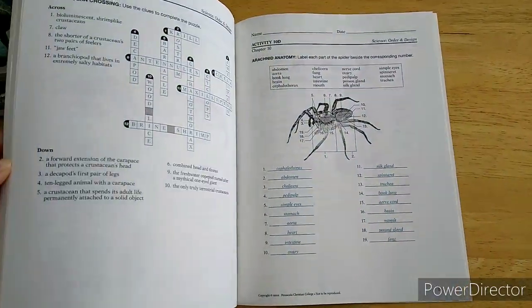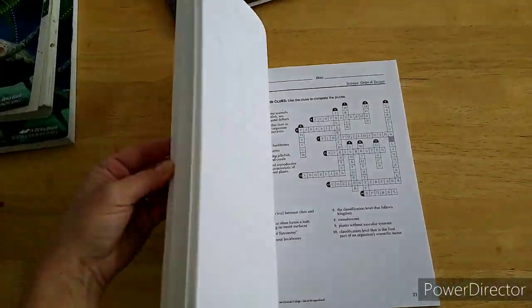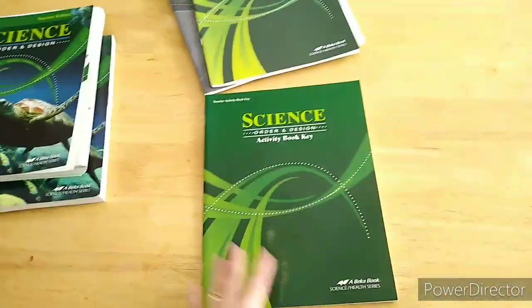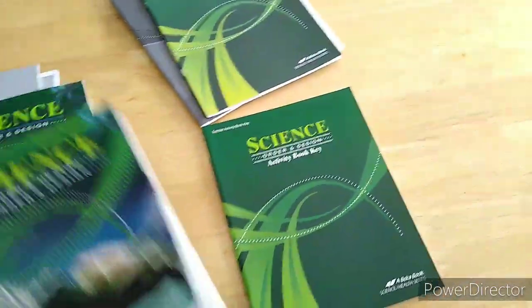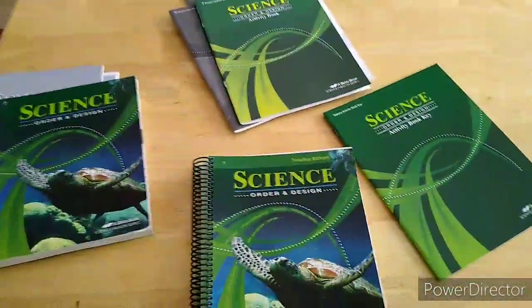And then the teacher's answer key to the activity book is the same, it just has the answers. All right, so there you go. That is just a quick walkthrough of Abeka 7th grade science. Thank you for watching.